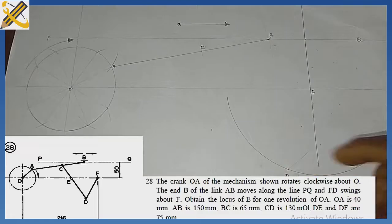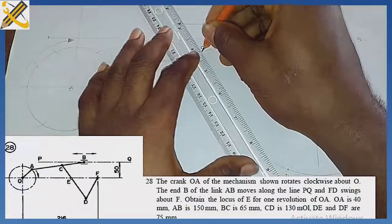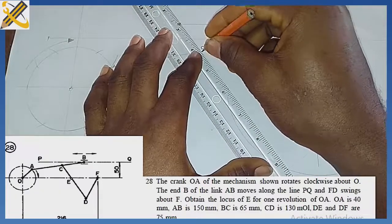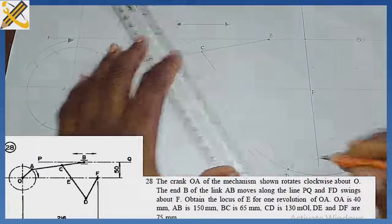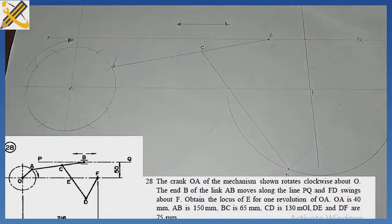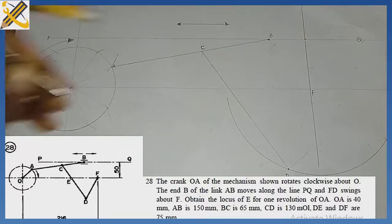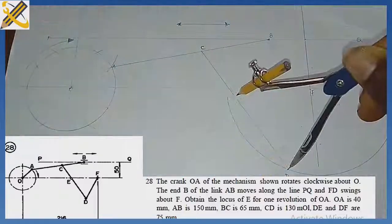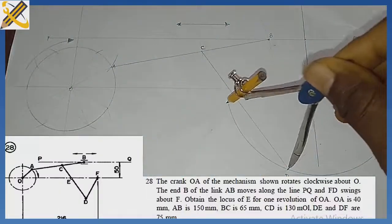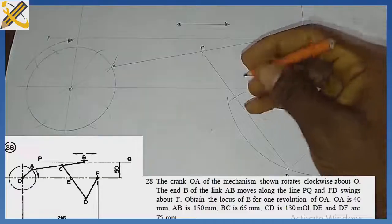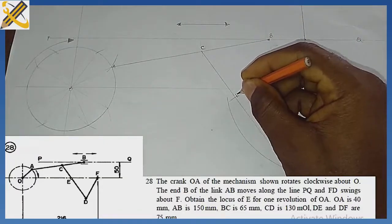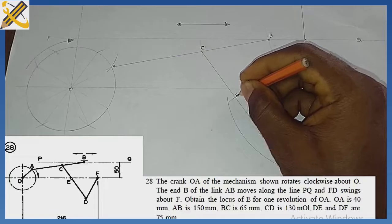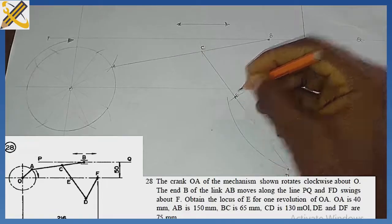After getting point D, pick your ruler and join point C to point D — using a thin line. Then we get DE. We are told the distance between D and E is 75. With your compass measuring 75, place it on point D and strike an arc on line CD to get point E. This junction is our point E, and we are plotting the locus of point E, so I'm going to asterisk this point E.